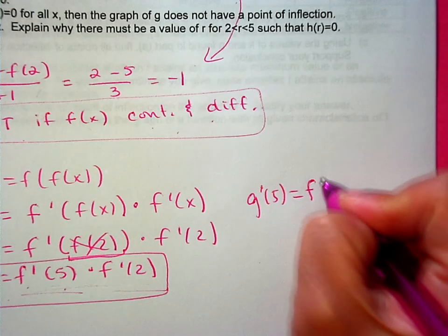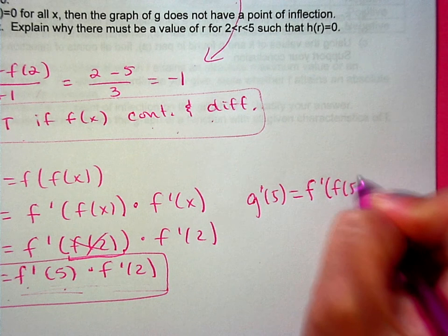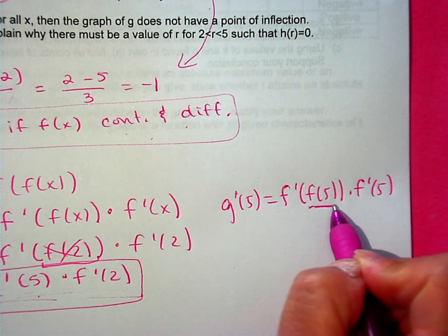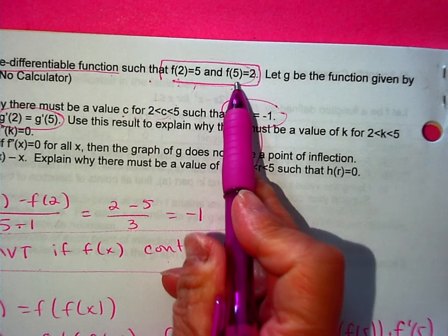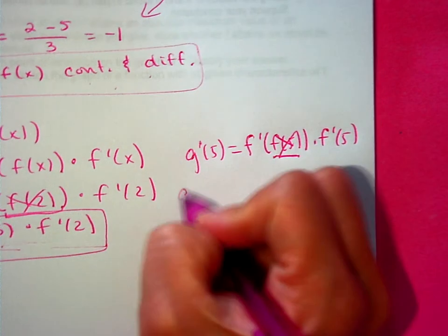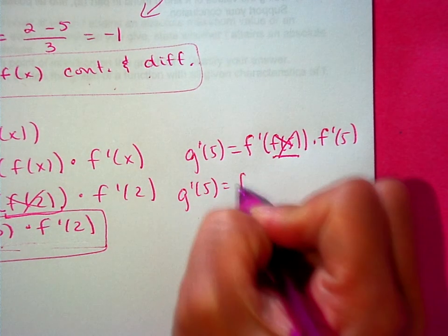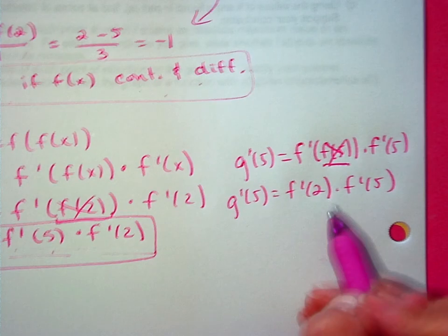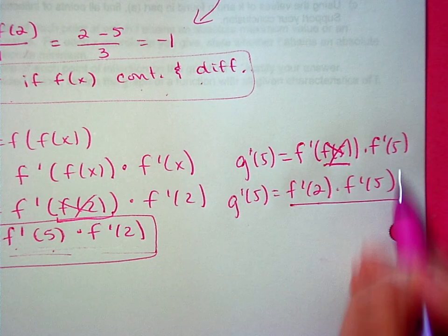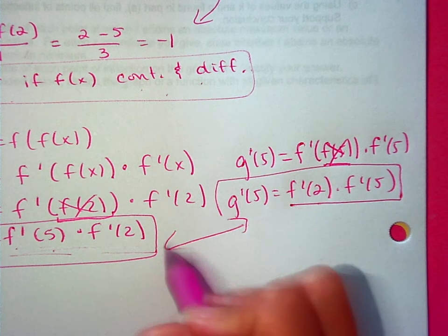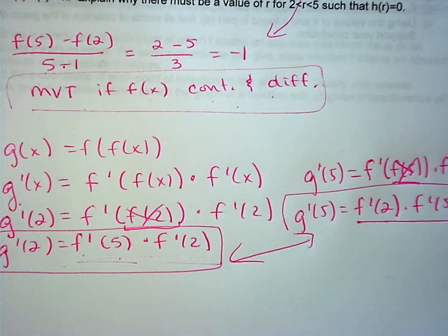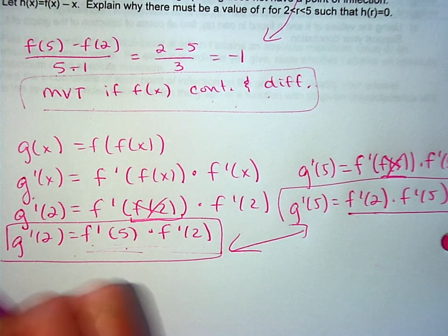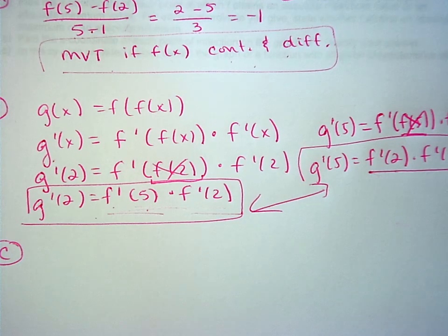Using the general rule, plug in x = 5: g′(5) = f′(f(5)) · f′(5). From the stem, f(5) = 2, so this becomes f′(2) · f′(5), which is the same as what we got for g′(2). That's how you show they are equal.